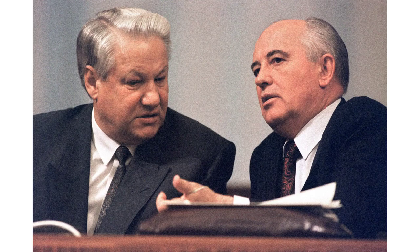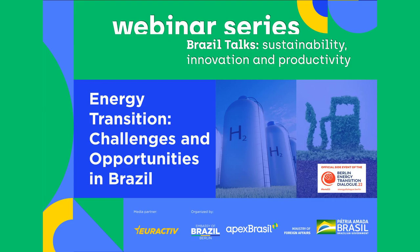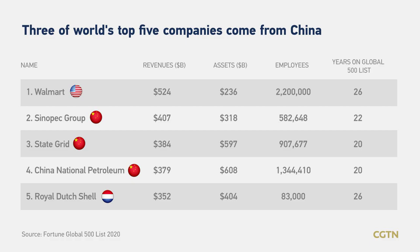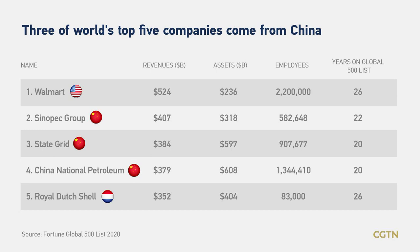The fall of the Soviet Union had far-reaching consequences that continue to shape the world today. In the immediate aftermath, the newly independent states faced numerous challenges as they transitioned from a communist system to a market economy and democratic governance. The Soviet Union had relied heavily on state-owned industries and centralized planning, which proved to be unsustainable in a globalized world. The newly independent states had to undertake painful economic reforms, including privatization and liberalization, to attract foreign investment and stimulate economic growth.